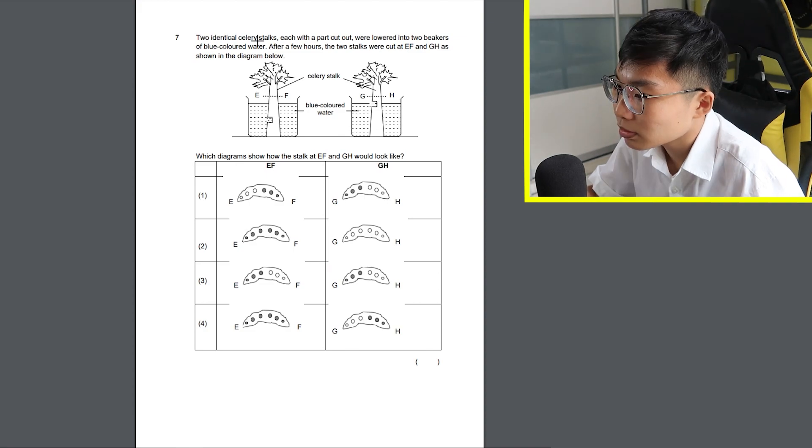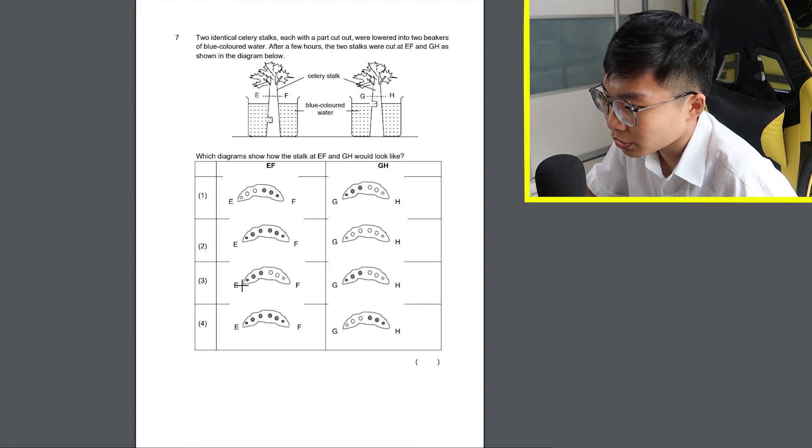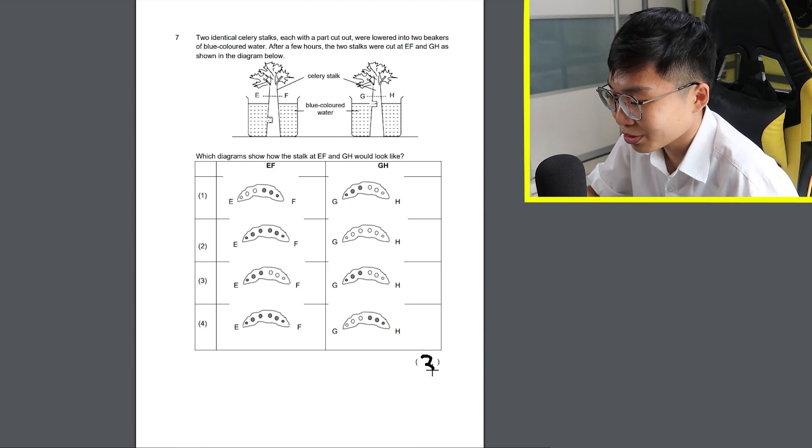Question 7. Which diagrams show how the stock at E, F and G, H would look like? I think it's 3 because the celery is cut on the left side, so only the left side can absorb the water. I might be wrong but I'm just gonna put 3.